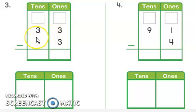So, the first thing I need to do is to show what I have using my models. So when I am going to draw my models, I am going to draw the number that is on the top, which is 33. I am going to do 10, 20, 30. And I have 31, 32, 33. That is what I have.